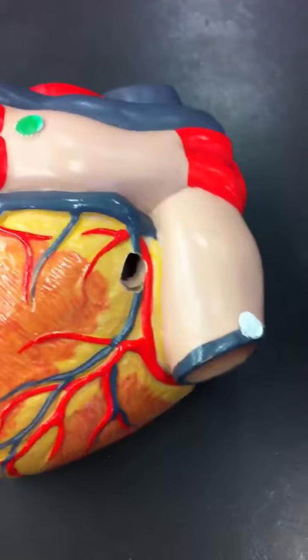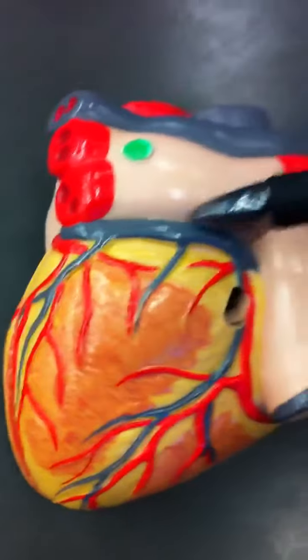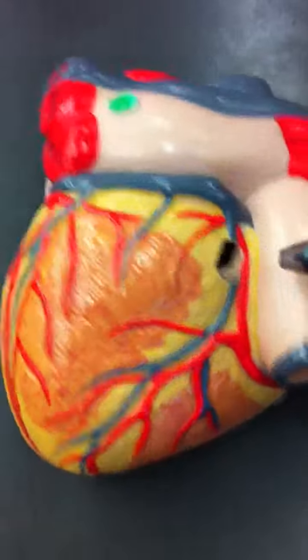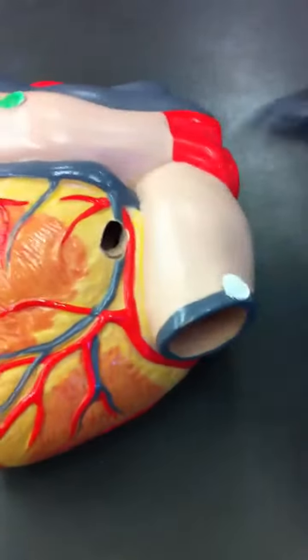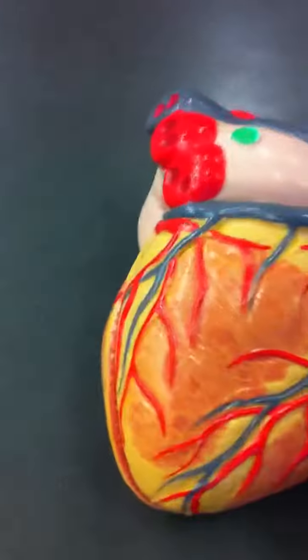As far as the veins go, we have the great venous cavity in the back. We have the right coronary artery on this side, and then we have a left one on the front as well.